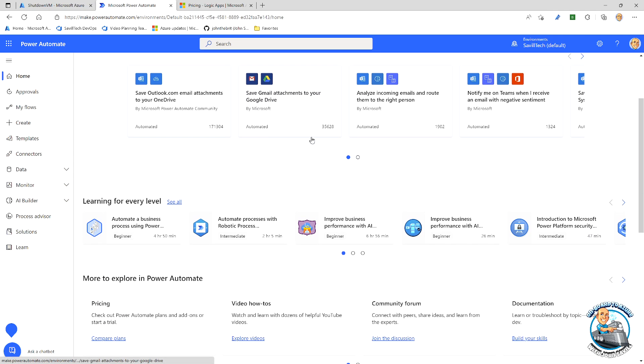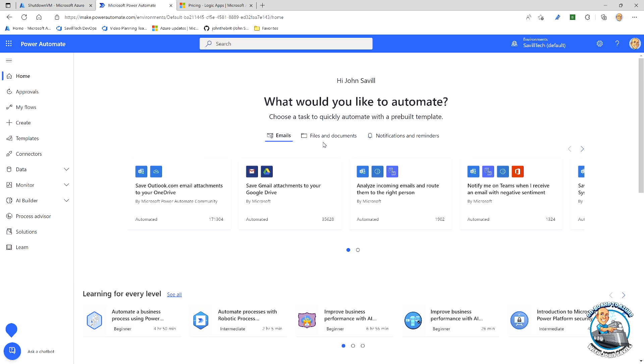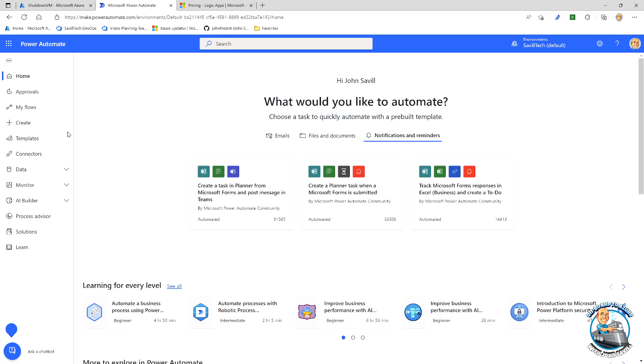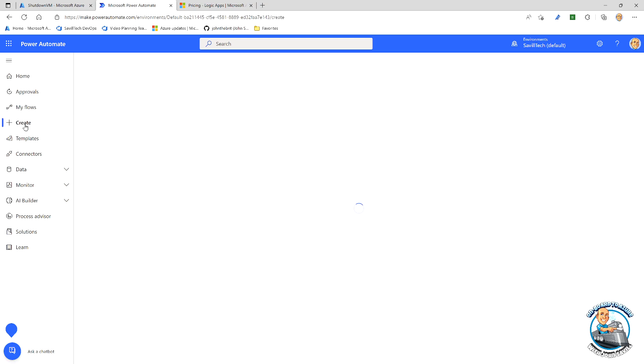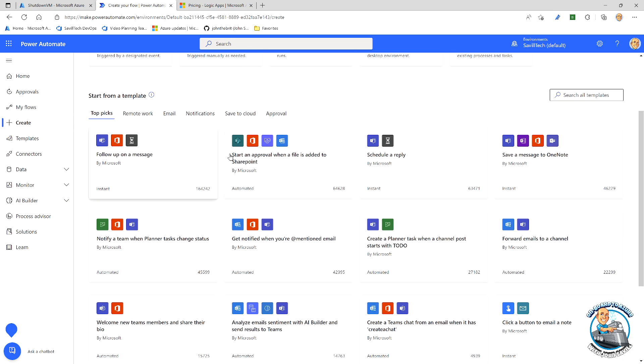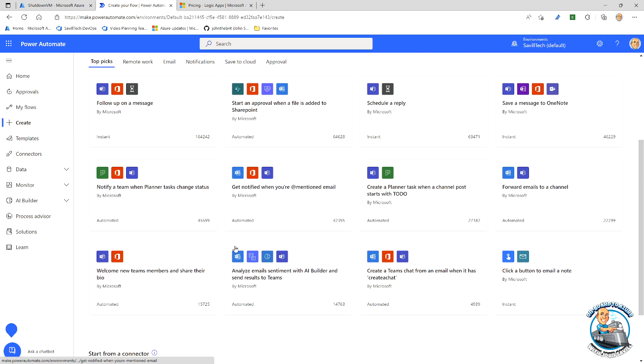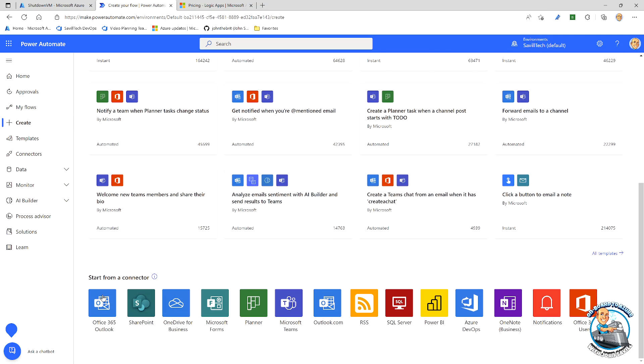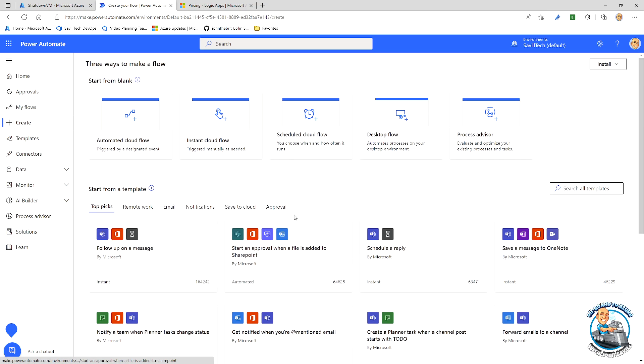If I go to make.powerautomate.com, which is the new URL, it's exactly the same. I can start off with templates. I hate thinking about email, files and documents, notifications and reminders. Or I can just say, hey, I want to create. And I could create from blank. Or we have all of these templates that I can leverage. Hey, I can start from a certain connector that I want to use.